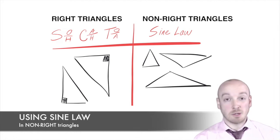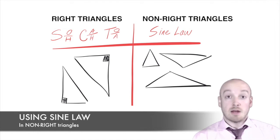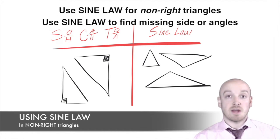Remember right triangles? They had that little box in the corner usually to identify them as being right triangles. Well, non-right triangles don't have one of those 90 degree angles. That's how you know to use sine law. Now, just like SOH CAH TOA, it's used to find missing side lengths and angles in these non-right triangles.